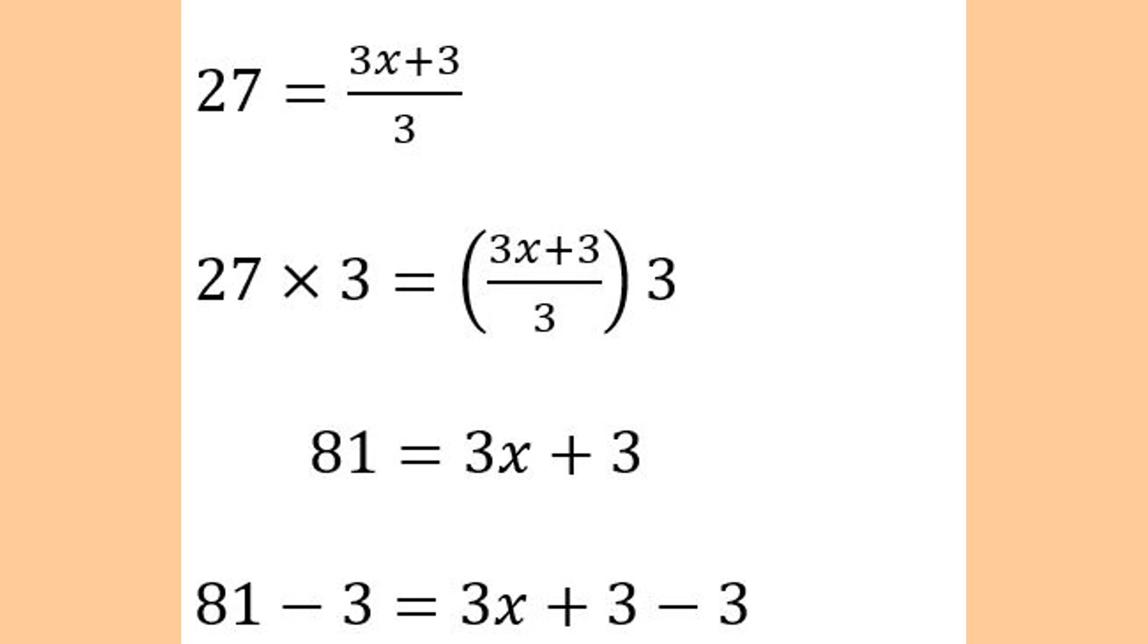When we multiply everything by 3, then we have this new equation. Our new equation is 81 equals 3x plus 3.